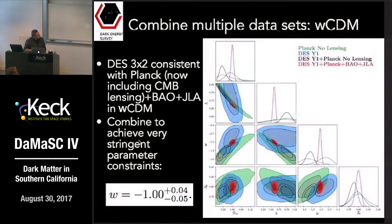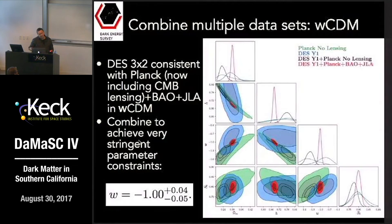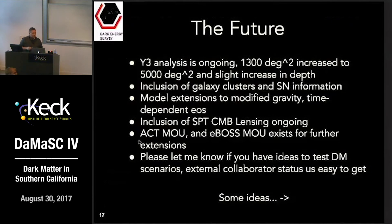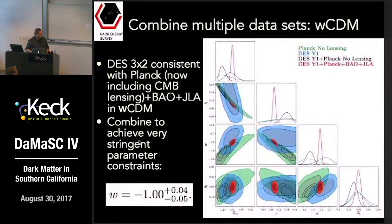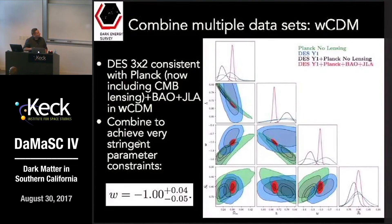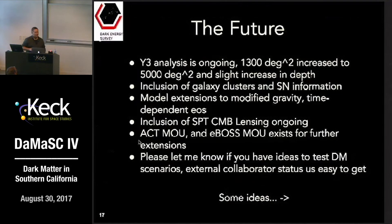Combining DES year one with Planck, BAO, and the joint light curve analysis supernova data set, we end up at W equal to minus 1.00. There will be a substantial increase in accuracy from additional data and improved multi-probe methodology. This was a blinded analysis — we did not change or tweak anything in the data after unblinding. Our shear catalogs were blinded and we were not allowed to look at the signal. After unblinding — which was pretty stressful — we found we didn't have to go back and confess failure. I encourage everybody to blind their analysis; it puts pressure on the collaboration and they will all work better.